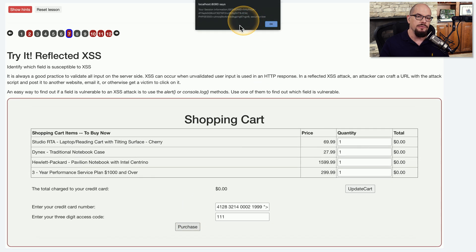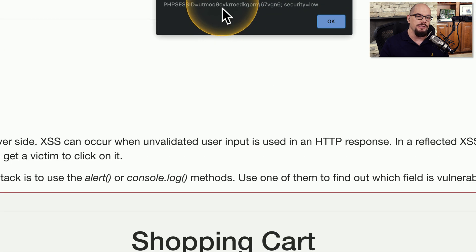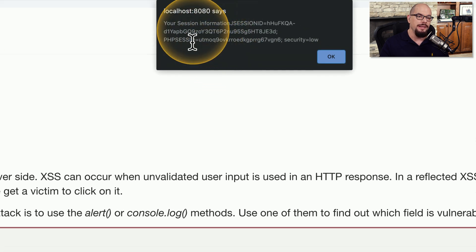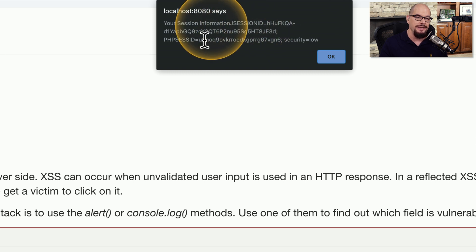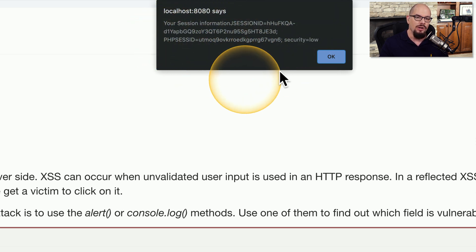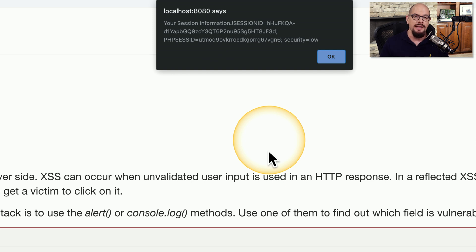Once we click the purchase button, we get a message at the top of our screen that is the session information — the J session ID and the PHP session ID — all in that alert message. This would normally be sent to the attacker, and they would be able to authenticate to this website as if they were us and gain access to all of our personal information.